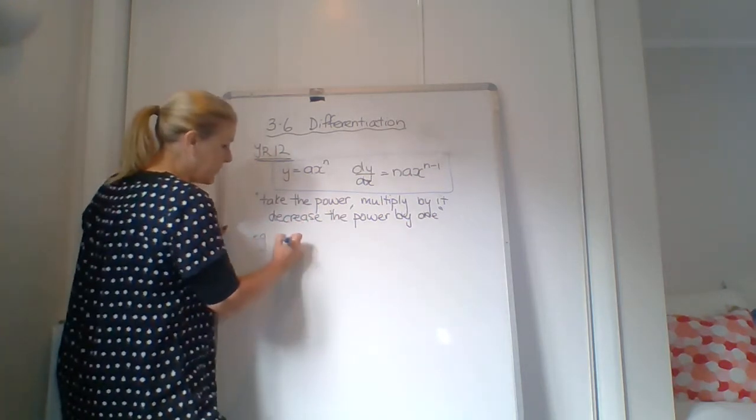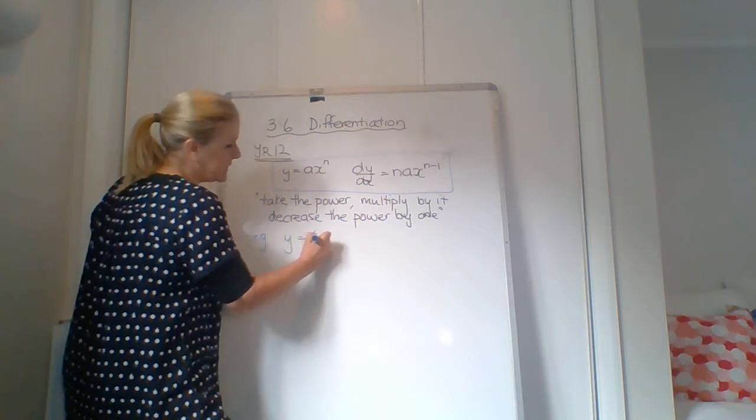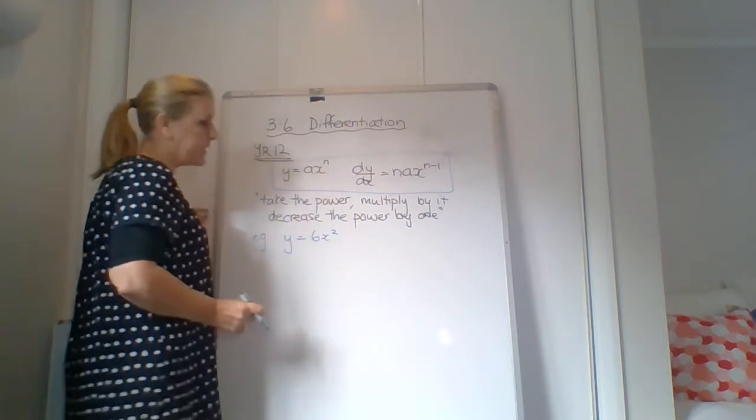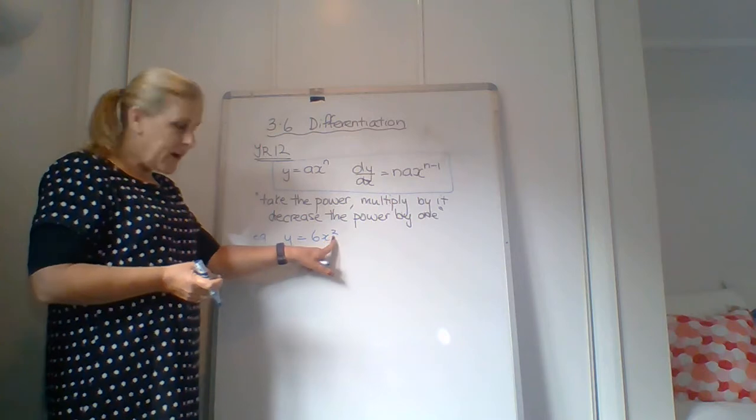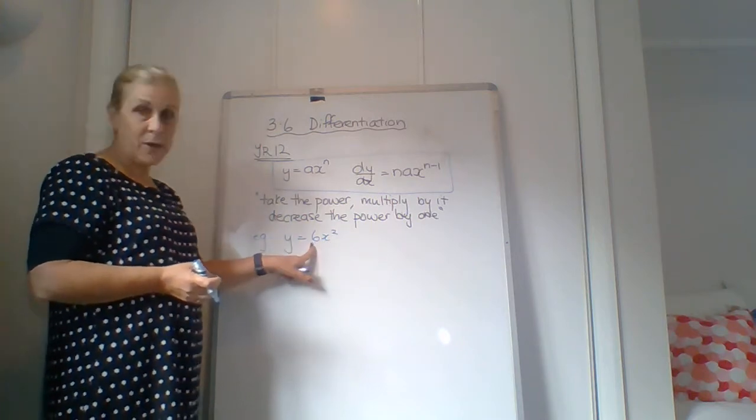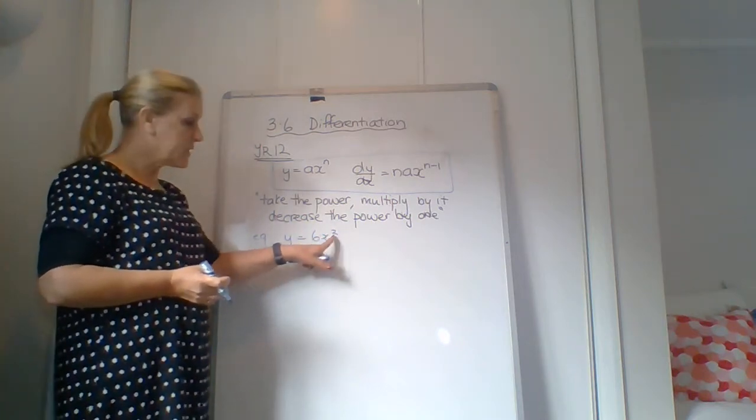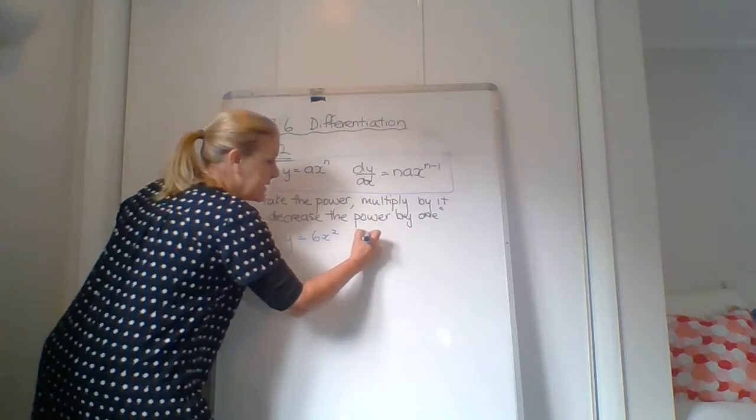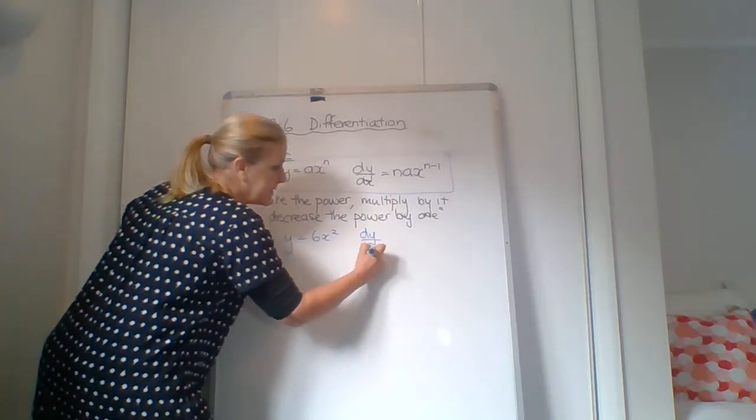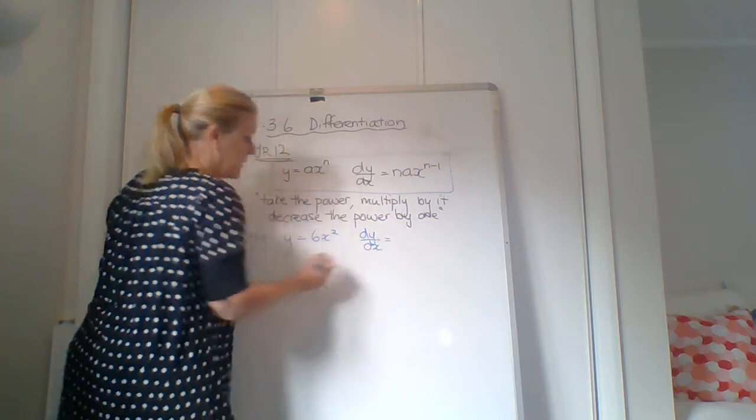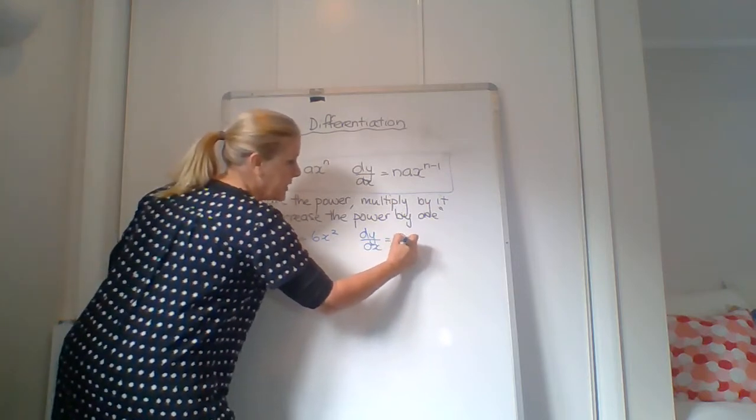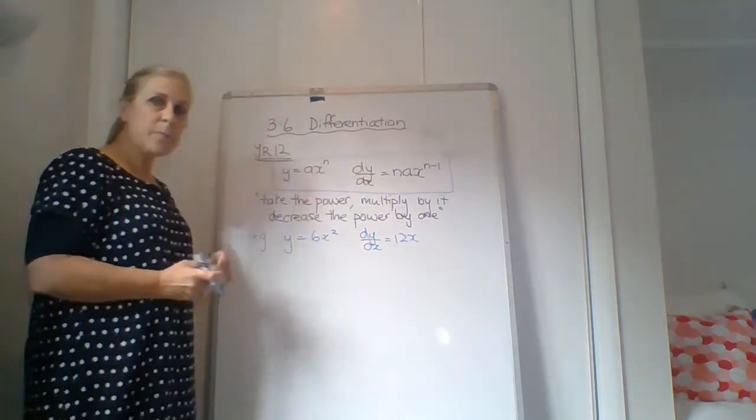Nice straightforward one. If you've got y equals 6x squared. If we take the power 2, we multiply by it, so 2 times 6, we decrease the power by 1. So we get dy by dx equals 12x. OK?